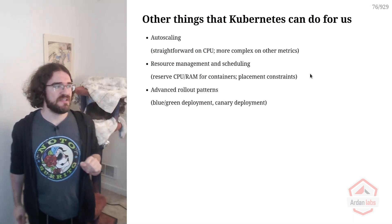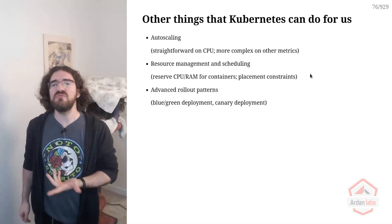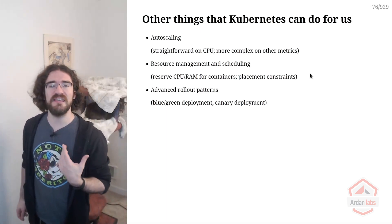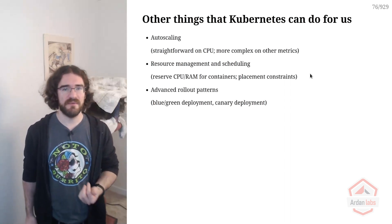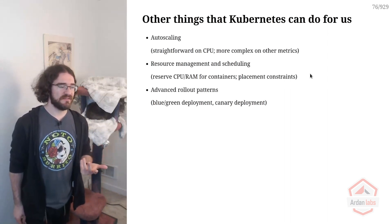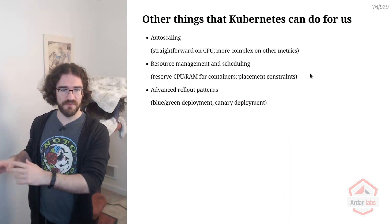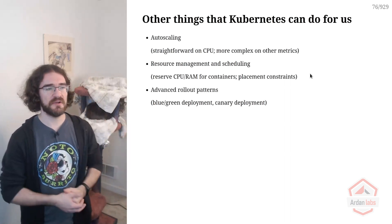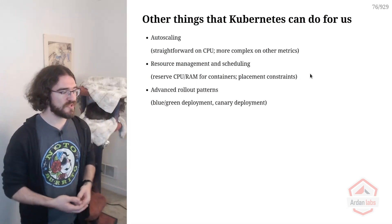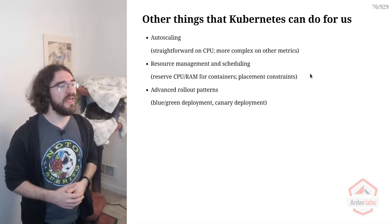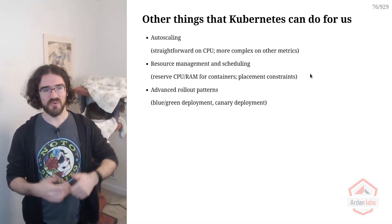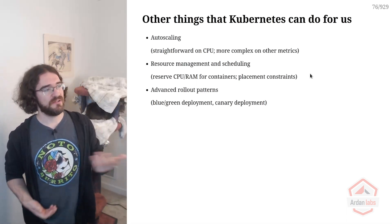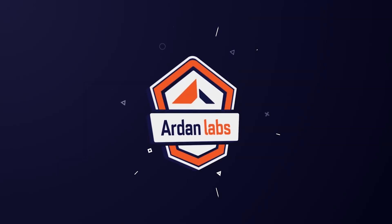Kubernetes does not have a kubectl blue-green command, but it gives us tools to make blue-green deployments easier to implement. I compare it to building IKEA furniture — you could do it by hand, or you could use an electric drill and power tools. Kubernetes is the electric drill. It makes it easier to build these things instead of doing everything manually.